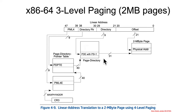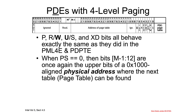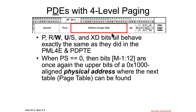And again, Intel was telling us this in this picture — a PDE with PS equals one is going to point at a two megabyte page instead of a four kilobyte one, instead of pointing at a page table that points at a four kilobyte one. So if page size is equal to zero, then this is going to be a page table physical address. The bottom 12 bits are always treated as zero, and the upper N bits, depending on how big your physical address space is, are treated as the physical address of the page table.